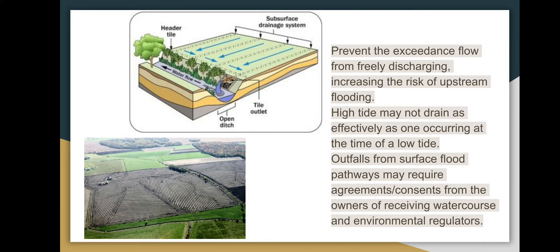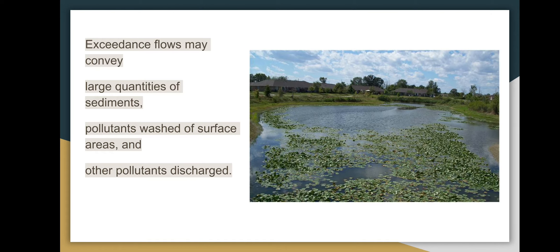In such cases, a joint probability analysis may be necessary. Outfalls from surface flood pathways may require agreement from the owners of the receiving watercourse, riparian owners, and environmental regulators. Early planning of such consent or agreement will greatly assist in land development.